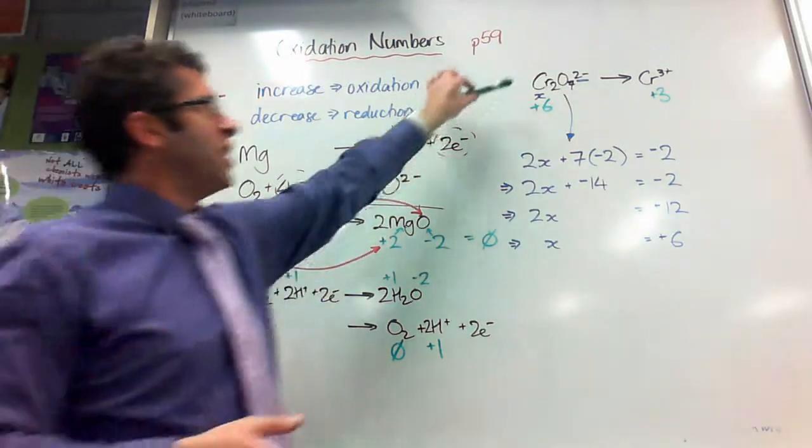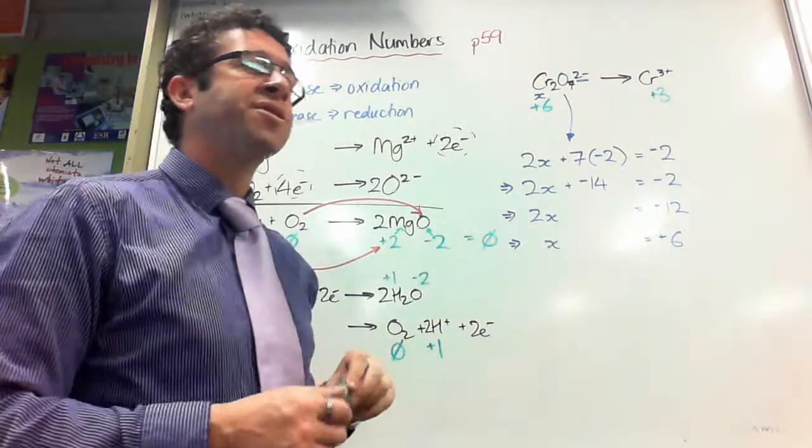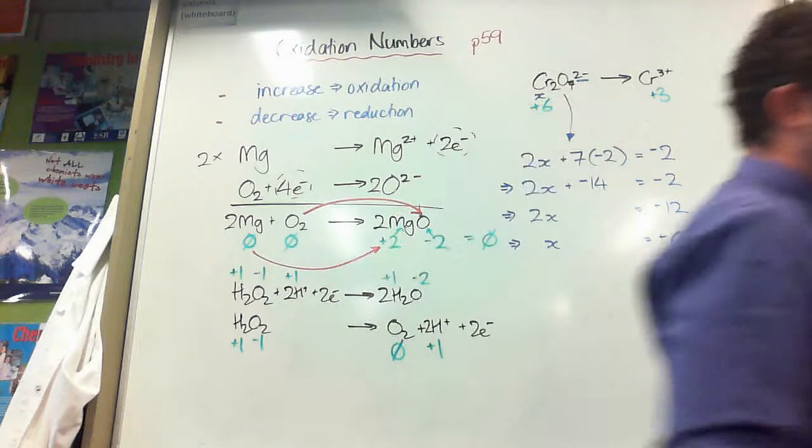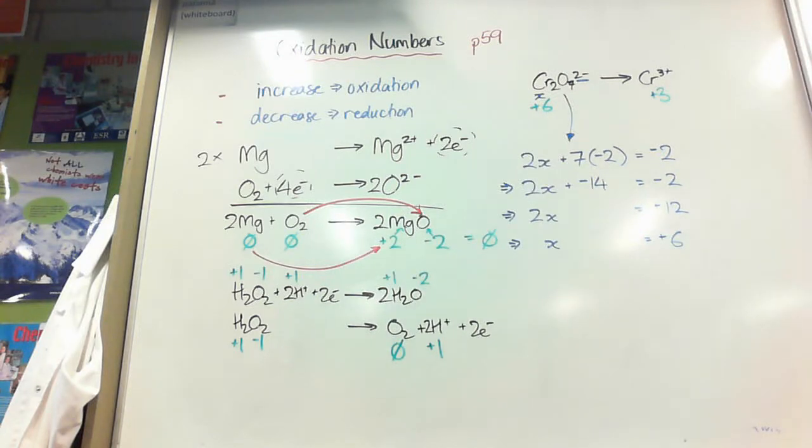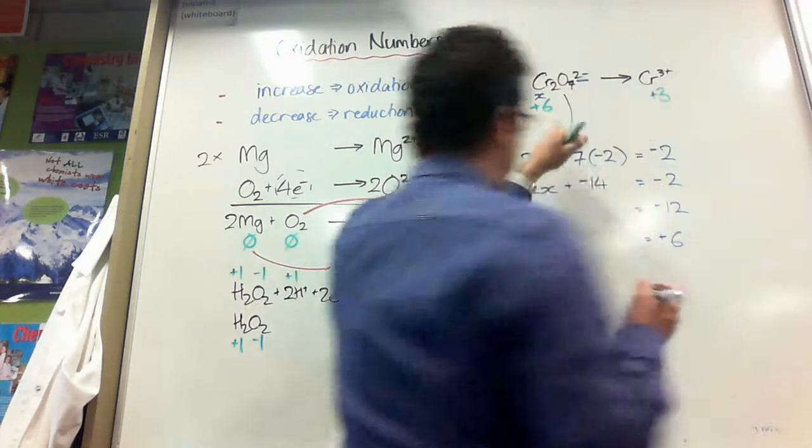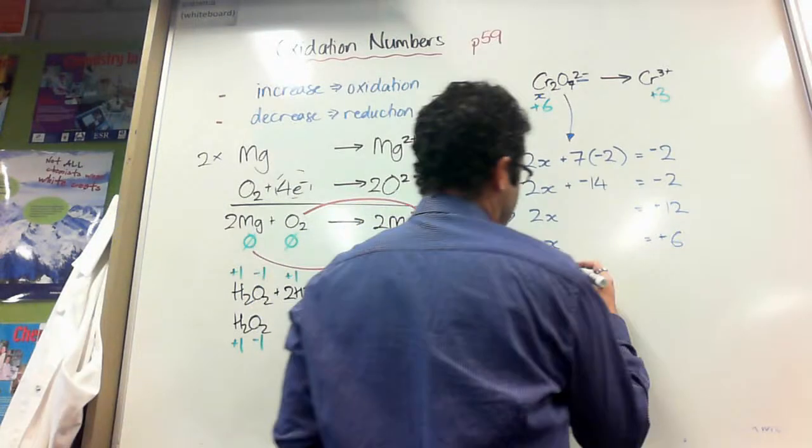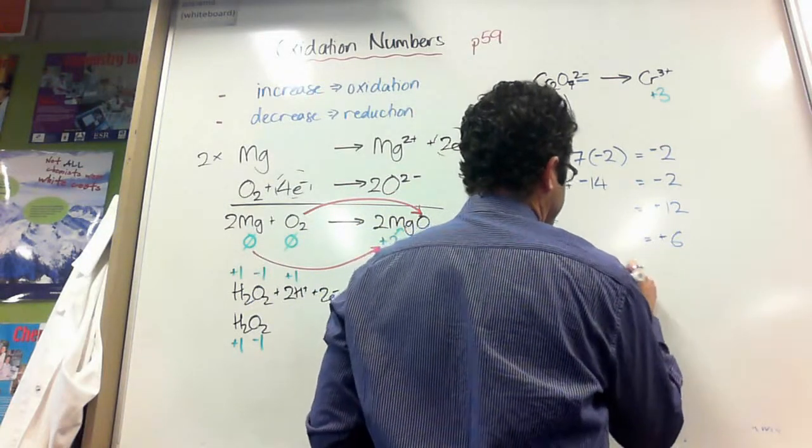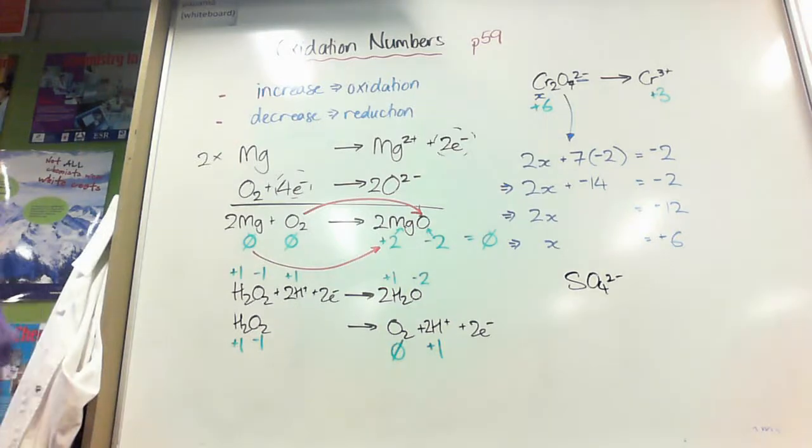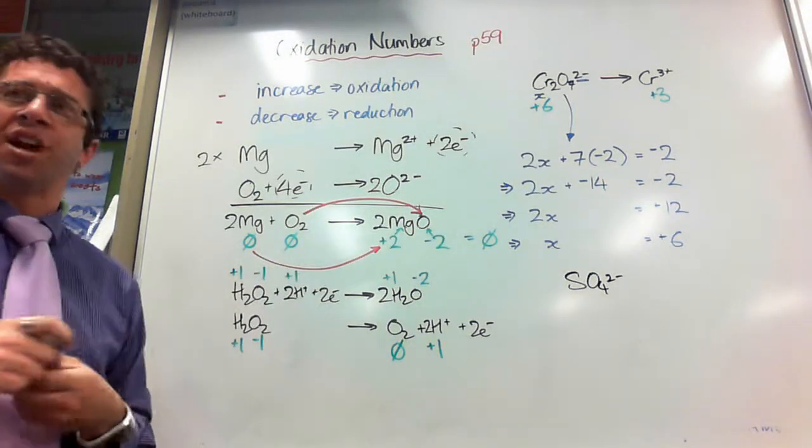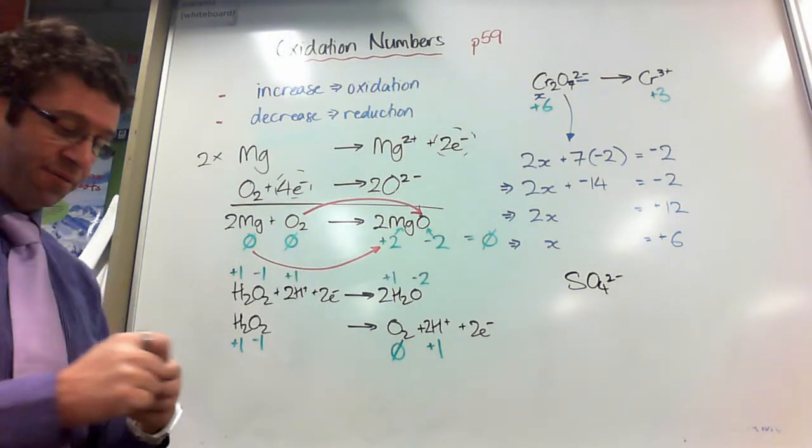I'm going to do one more because I know these ones are quite hard when it's an ion. I'm going to do the sulfate ion because it's a common one in level 2. But I'm not going to break it down quite to the same level of this one. So, the sulfate ion. So, I'm not going to show you what it becomes. I'm just going to show you how to assign the oxidation number to the sulfur.